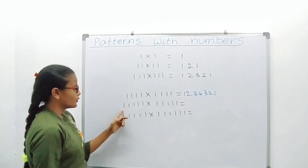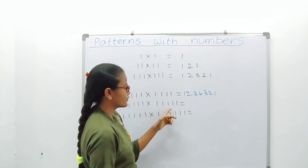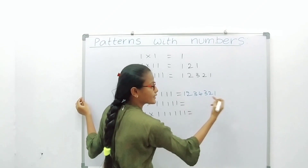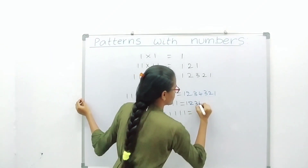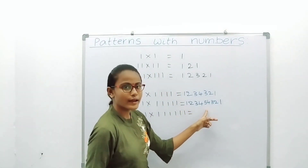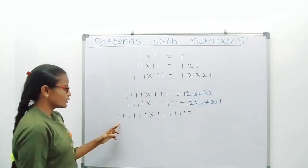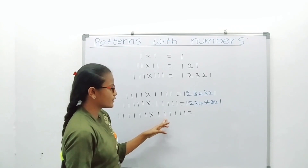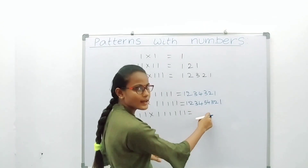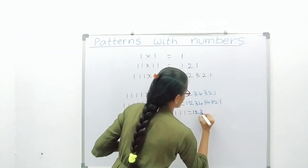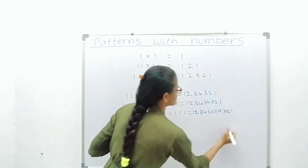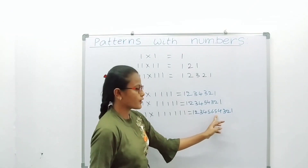11111 into 11111 — here 5 ones into 5 ones, so you increase to 5 and decrease to 1. The answer is 123454321. 111111 into 111111 — here 6 ones into 6 ones, so you increase to 6 and decrease to 1. The answer is 12345654321.